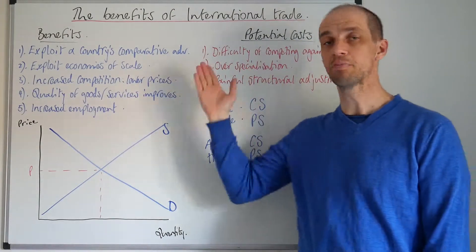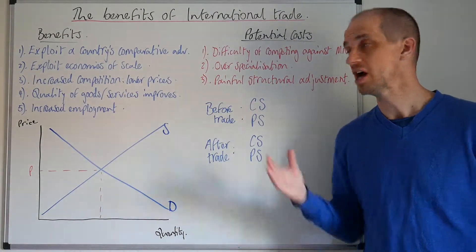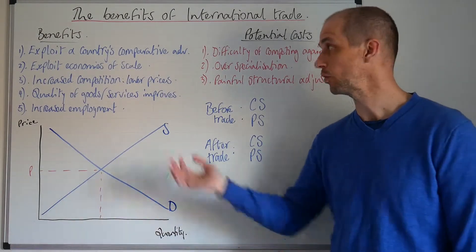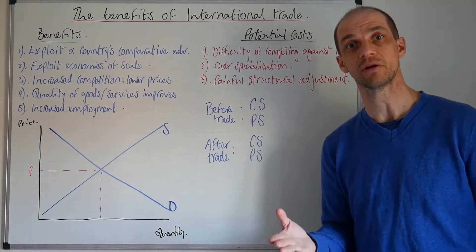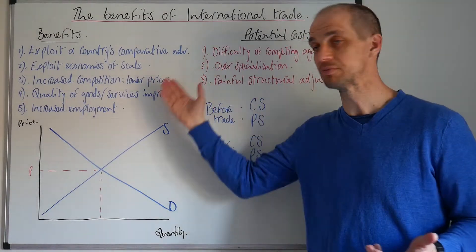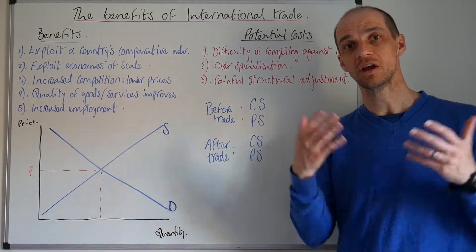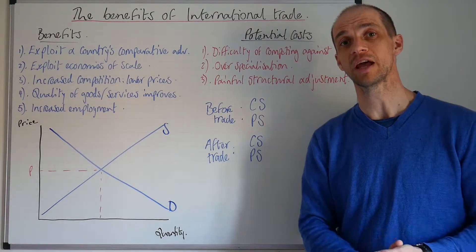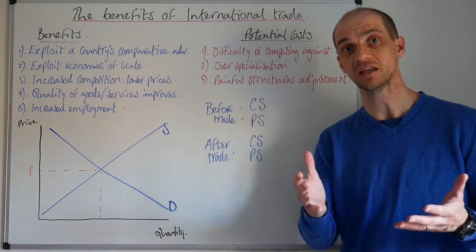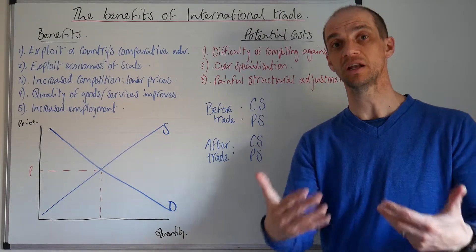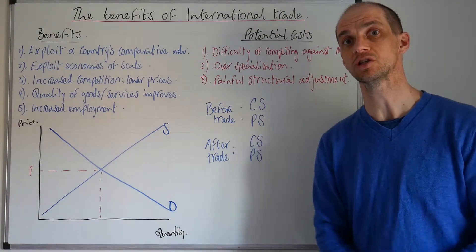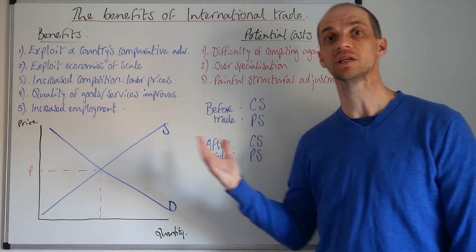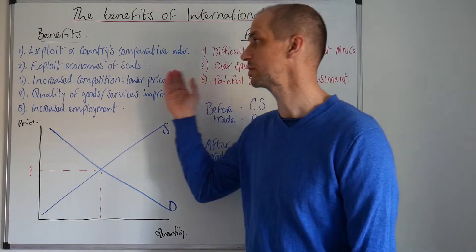There's also the prospect of increased competition, and that improves the supply side of the global economy and helps to reduce prices overall. When it comes to laptop prices and white goods generally, the price of those goods has really come down over the last 10 to 15 years, as China has been able to increase production at very little cost, and thus we see lower prices in Western markets.